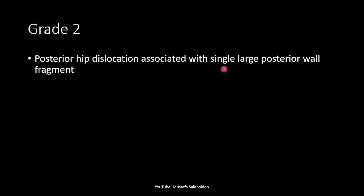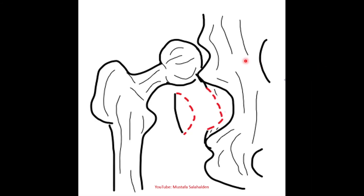In grade 2 there is a posterior hip dislocation associated with a single large posterior wall fragment. This time it is a larger fragment from the posterior wall. The drawing shows the dislocation — the femoral head is not sitting in the acetabulum — and there is a larger fragment from the posterior wall.